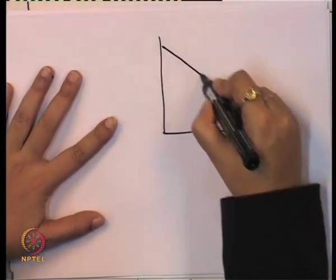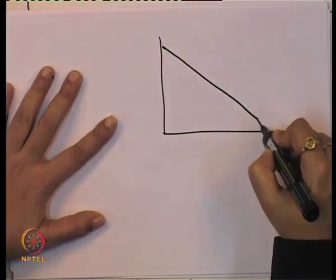This means that in the case of an increase or in the case of a decrease, the demand may be different — sometimes inelastic and sometimes elastic. Now, we will take the case of arc elasticity of demand, where we measure the elasticity of demand in a segment.